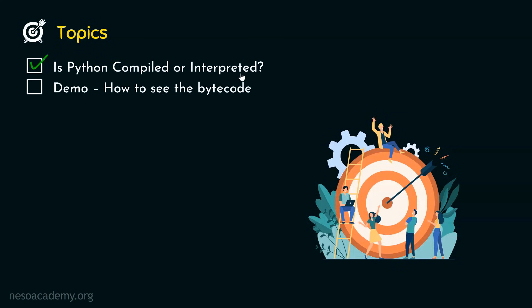Now we are ready to see the demo of how to see the bytecode. In reality, when you run the code, you will never see the bytecode. In order to see the bytecode, we just need to compile the code. But when you simply run the Python code, you will both compile and interpret the code. I will show you the complete process of how to see the bytecode.